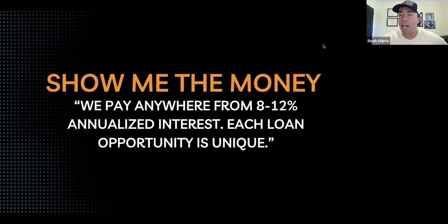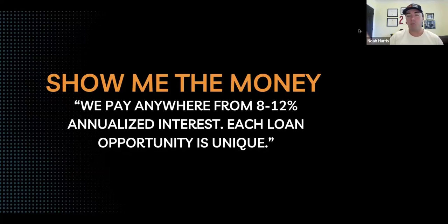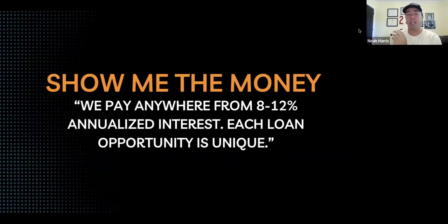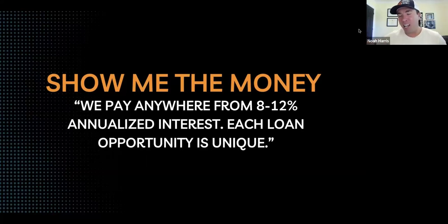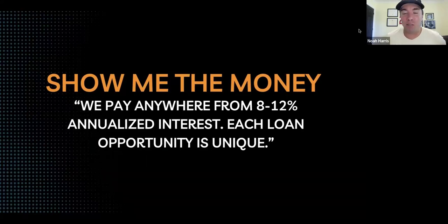Just like a bank. Have your numbers figured out — run your calculations, know what you'll pay. We pay anywhere from 8 to 12 percent annualized interest; each loan opportunity is unique. Maybe you pay more, maybe less — in my accelerator class I teach giving a range so you can start negotiating. Lenders always want more — they'll push for 12 or 15 percent — and borrowers start them down around 9. Learning how to negotiate to a win-win where everyone leaves happy is one of the things we teach.